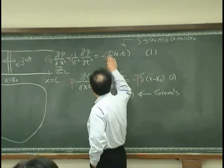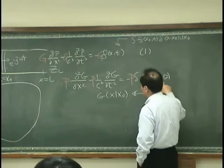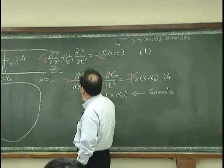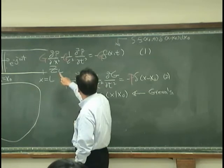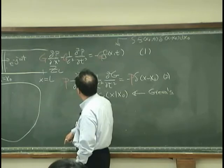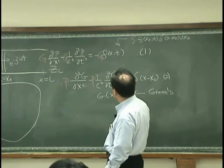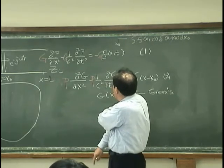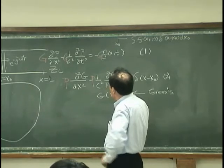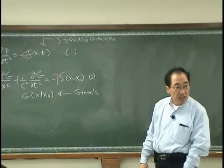I subtract equation 1 that is multiplied by G from equation 2 that is multiplied by P. Then I will have this one. Then nothing is canceled out.